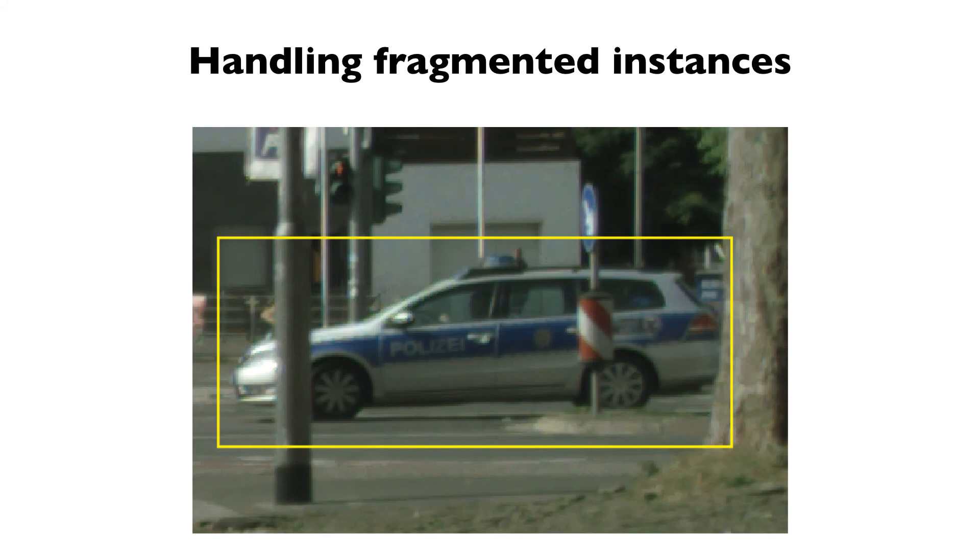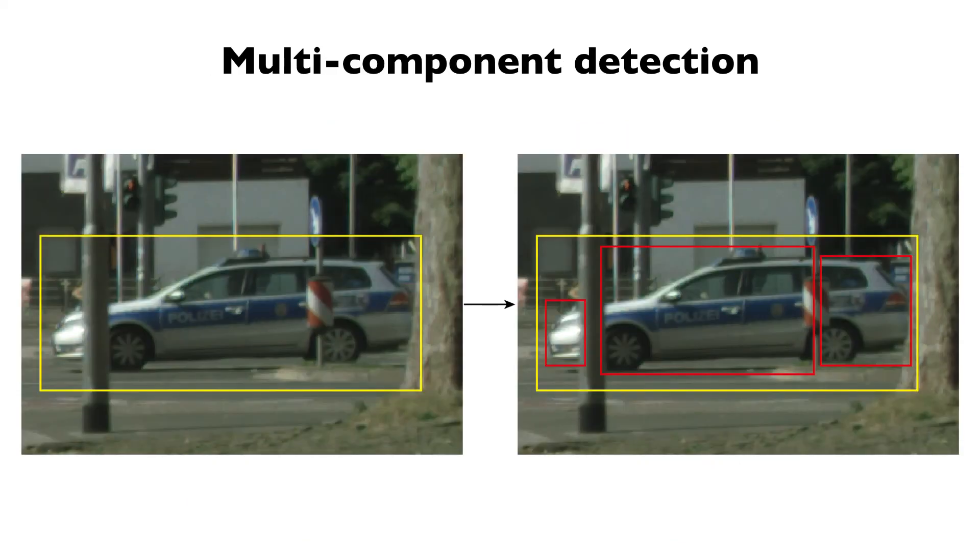The remaining problem is how to handle fragmented instances. As shown in the image, the car is split into three components due to occlusions. However, a bounding box produces only one contour, which can only outline one component.